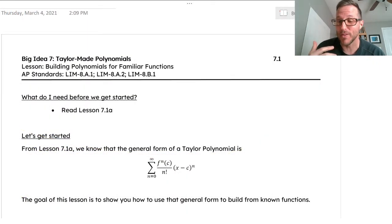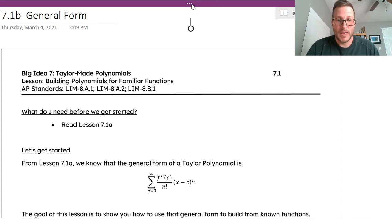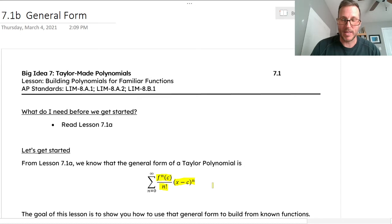What I hope to do today with this lesson is walk you through how to build one of these polynomials. How do we take a function and turn it into a polynomial of any degree, much less an infinite degree? I want to build one with you using the general form here. The general form of a Taylor polynomial is the sum from n equals zero to infinity of the nth derivative of our function at c, which is the center, divided by n factorial, multiplied by x minus c raised to the nth. This is a general way to build any Taylor polynomial.